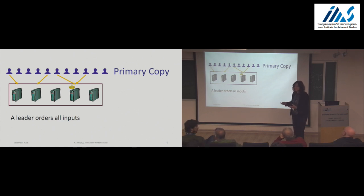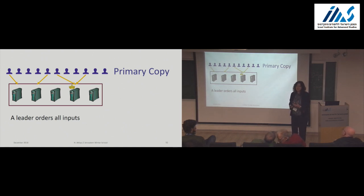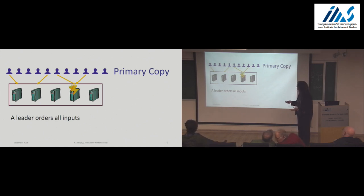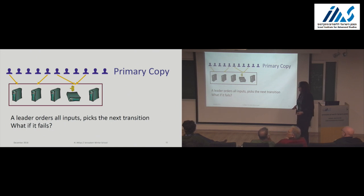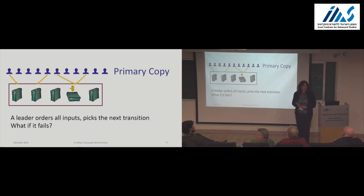The first approach is primary copy: we have one copy that keeps track of what's happening — a leader, the king in my slides — and it orders all the inputs. Once we have a single point that orders all the inputs, there's no question what's first, what's second. Every client sends to either the closest server or to the leader itself, the servers share the inputs, and the leader determines the order. Everything is nice until the leader fails. If the leader fails, we have a single point of failure — everything is forgotten, we're waiting for answers, and the whole system is stuck. That's not a good thing.